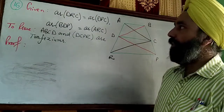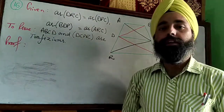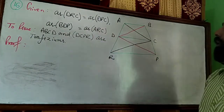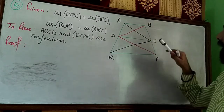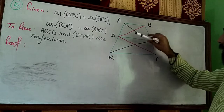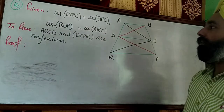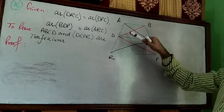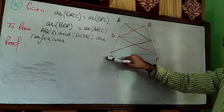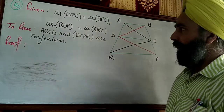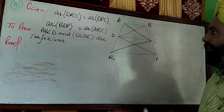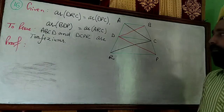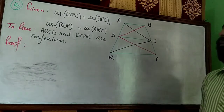In this video we are going to solve question number 16 of exercise 9.3. Here, area of DRC equals area of DPC — these two triangles have equal areas. Also, area BDP equals area ARC. We need to prove that ABCD and DCPR are trapeziums.